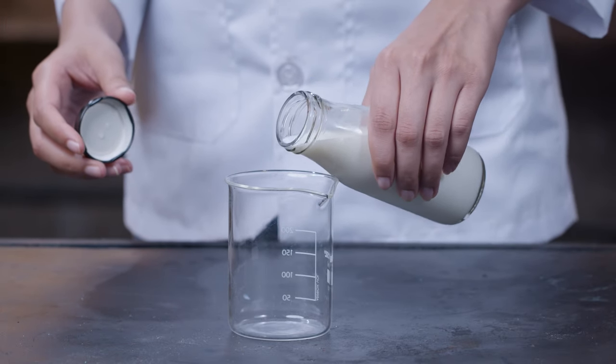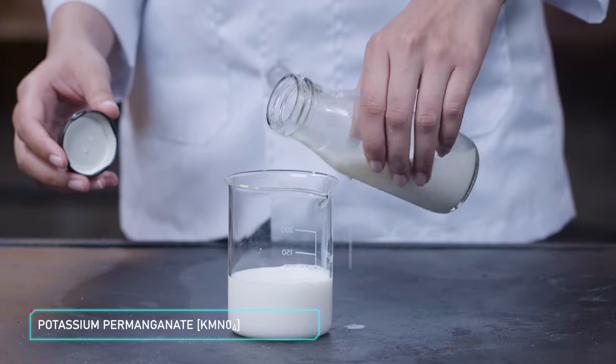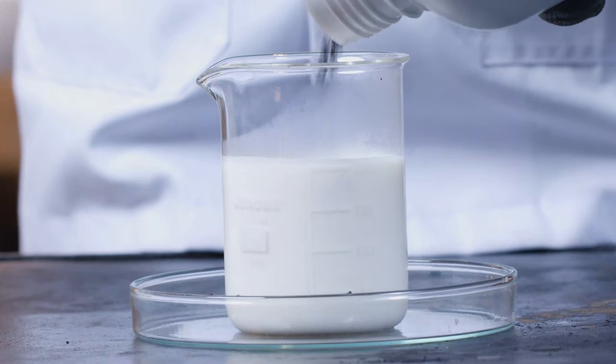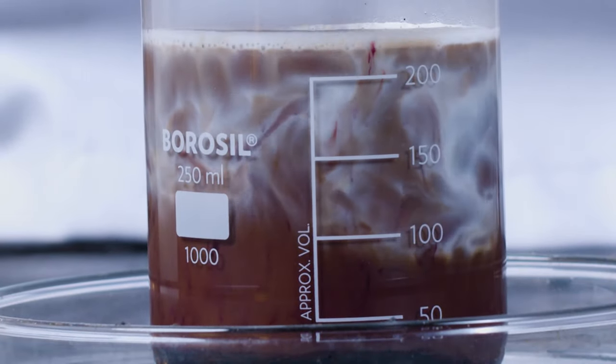So pour all of that milk into a beaker and add the potassium permanganate crystals to it. Yes, I know it just turned brownish and nothing else is happening, but just give it some time. Patience is a virtue.